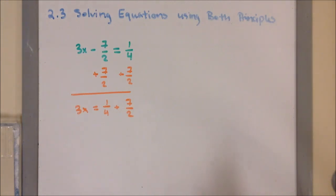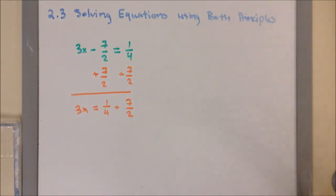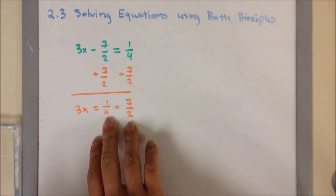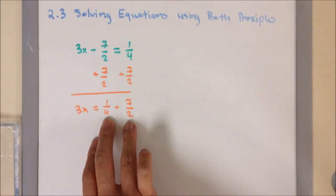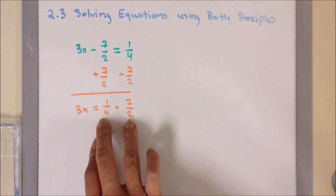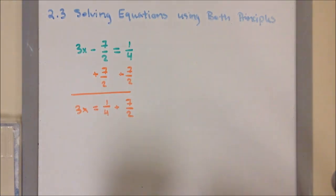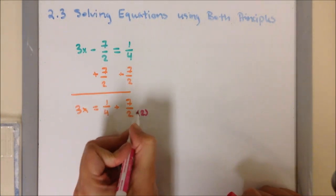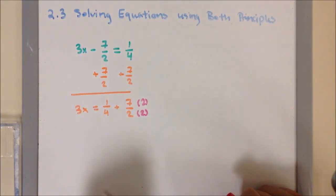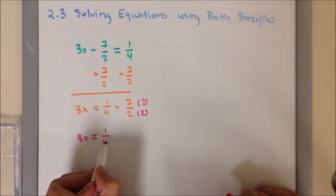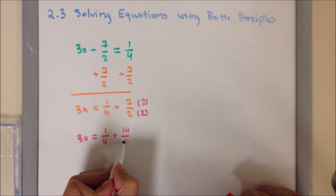From there, I notice that we have uncommon denominators, meaning not the same. We have unlike denominators. So we need to have the same denominator in order to add or subtract fractions. The common denominator between 4 and 2 is 4, because 2 can become 4 by multiplying by 2. So I'm going to multiply by 2 on the denominator and on the numerator. It's going to look like 3x equals 1/4 plus 14/4.